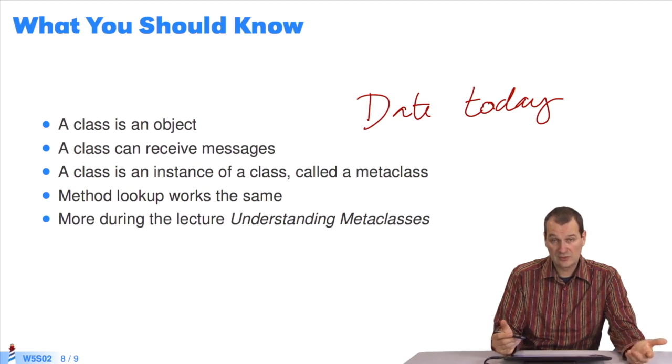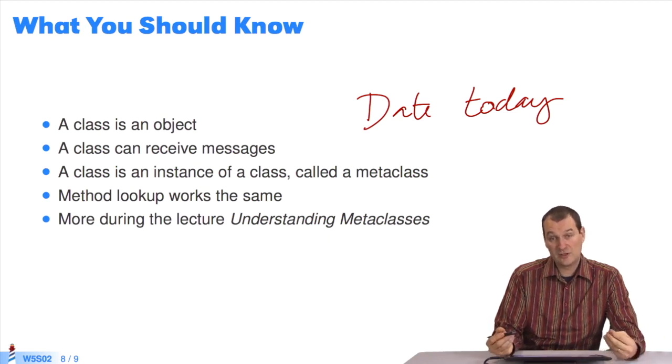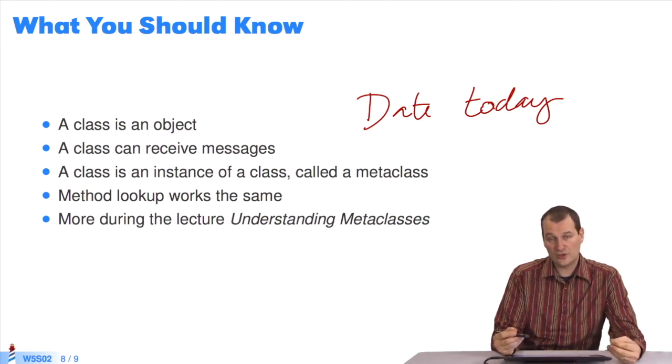When it's an instance, it's looked up in the class. When it's an instance class like the counter class, it's looked up in the metaclass, in the class called counter class. So, a class is an instance of another class, called a metaclass, and only one lookup works.